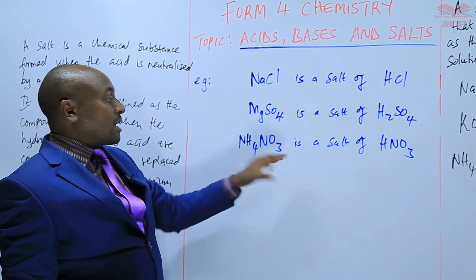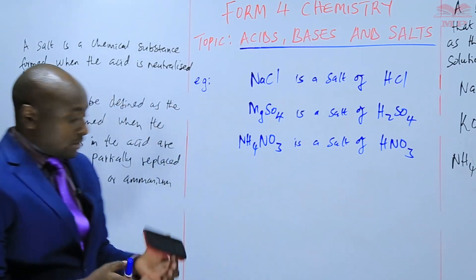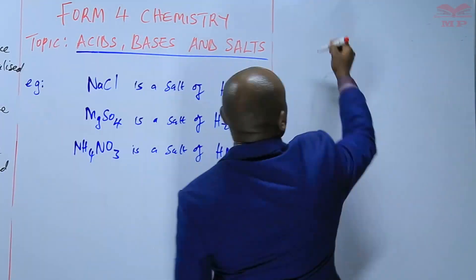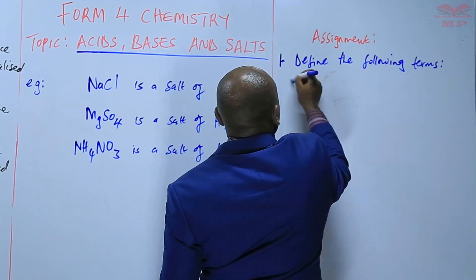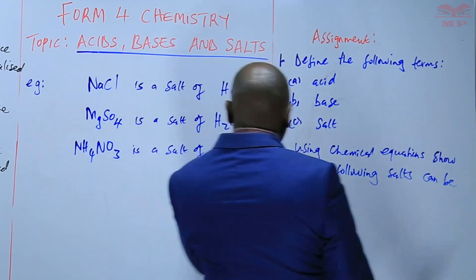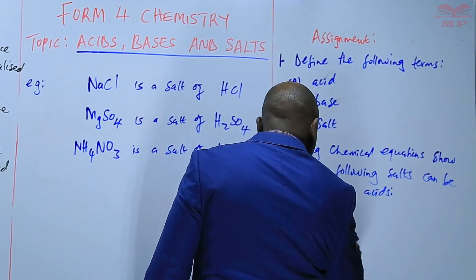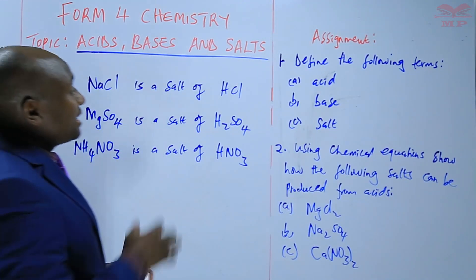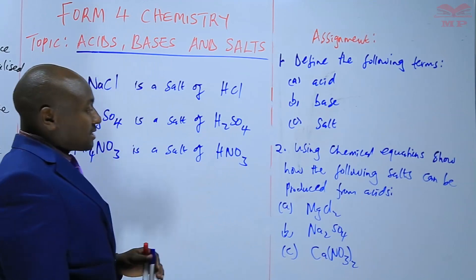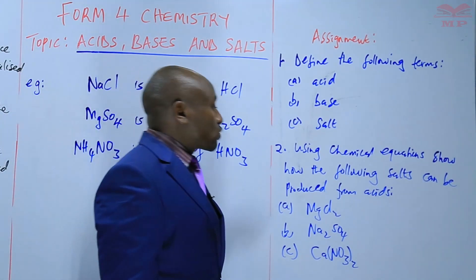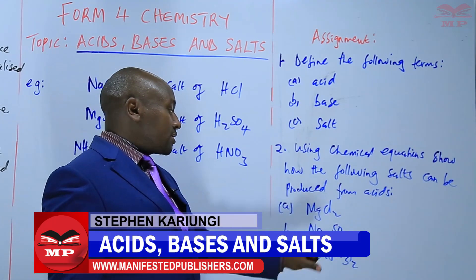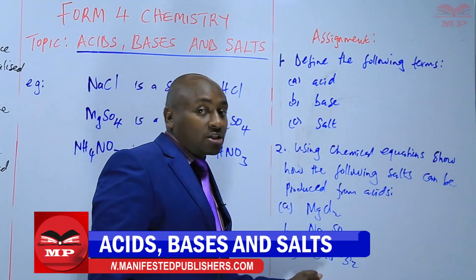So we are going to have a short exercise. Question one: define the terms acid, base and salt as we have discussed. Question two: using chemical equations, show how the following salts can be produced from particular acids — magnesium chloride, sodium sulfate, and calcium nitrate. We will stop there until next time.